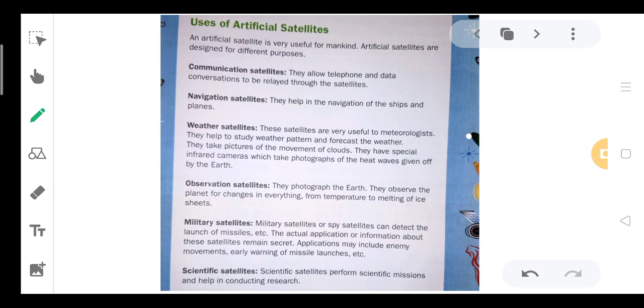Observation satellites photograph Earth. They observe the planet for changes in everything from temperature to melting of the ice sheet.